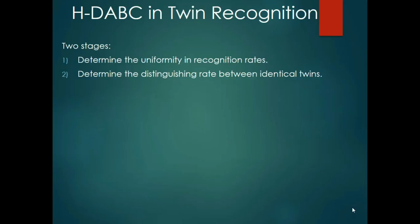Once the uniformity in the recognition rates has been established, the images of twin A are provided as input for the training phase and the images of twin B are provided as input for the testing phase. During this stage, the distinguishing rate between the identical twins is determined.